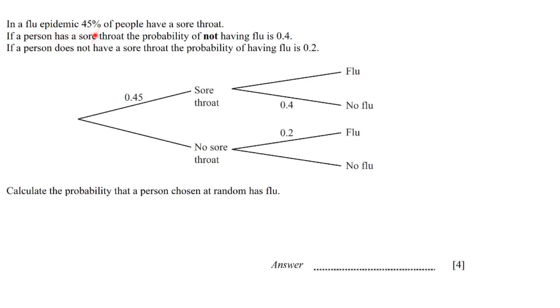Next question: In a flu epidemic, 45 percent of people have a sore throat. If a person has a sore throat, the probability of not having flu is 0.4. If a person does not have a sore throat, the probability of having flu is 0.2. Calculate the probability that a person chosen at random has flu. We know that the total probability equals 1, so this plus this will equal to 1. 45 percent, if we write like that, gives us 0.45 here. 1 minus 0.45 gives us 0.55, that is no sore throat.